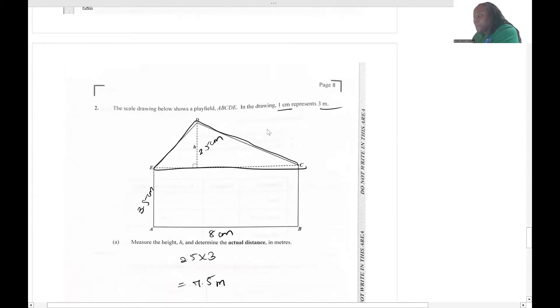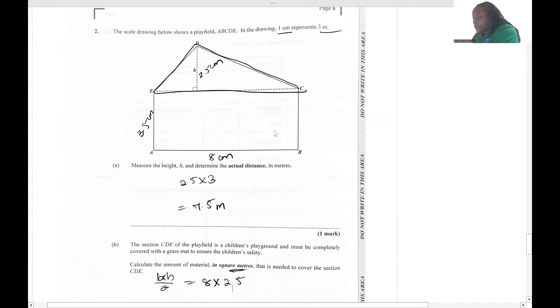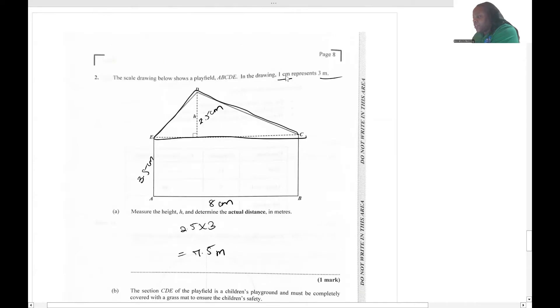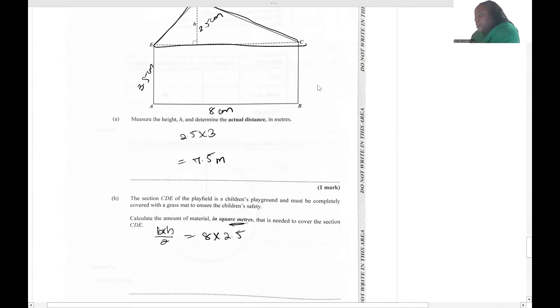I'm just going to convert it to meters one time. We have a scale here which is that one centimeter represents 3 meters. So 8 times 3 is 24 multiplied by 2.5 by 3 - we just wrote that 7.5 - and then we divide by 2. That's 180 divided by 2, which is going to give us 90 meters squared.